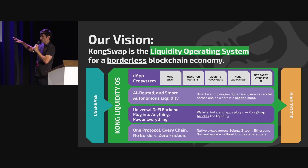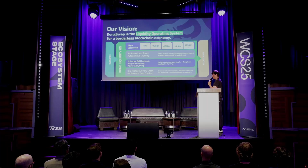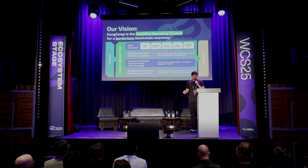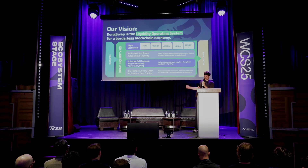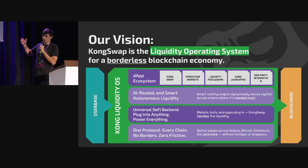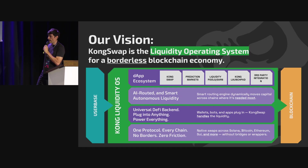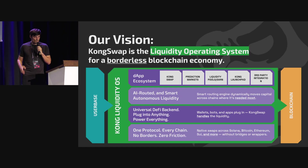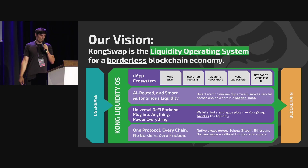On top of that layer we see a universal DeFi backend. Anybody can plug into Kong and power everything — our protocol is basically a set of API calls that are completely permissionless. Right now we have five to ten teams building their services with our backend without us even knowing about all of them.